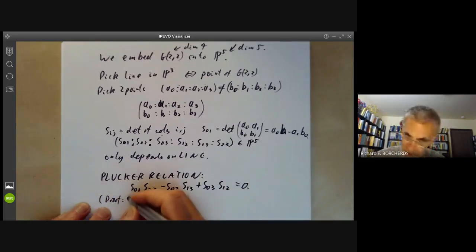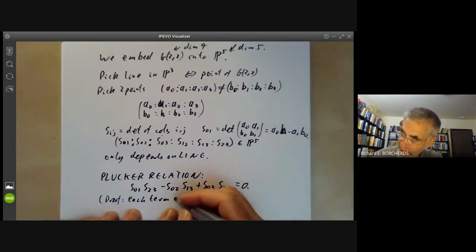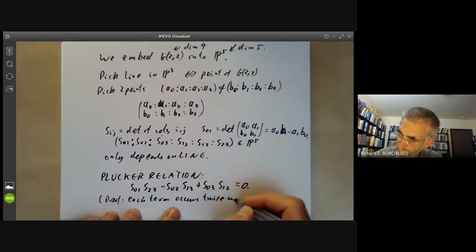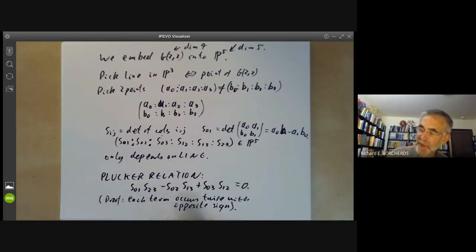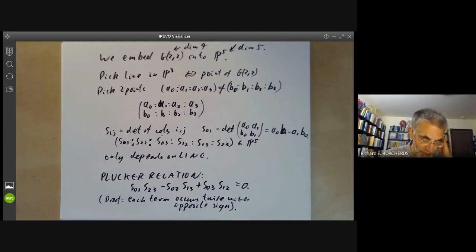Each term of the form A something times B something times A something times B something occurs twice with opposite sign. So everything just cancels out. There's a pretty good chance I got a sign error wrong in this somewhere and that they won't cancel out because the signs of the Plucker relation are a bit tricky but modulo stupid errors I've made this Plucker relation holds between these.